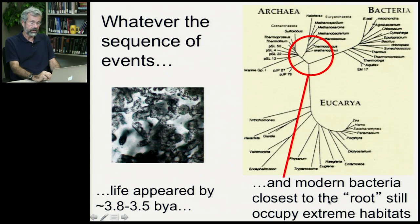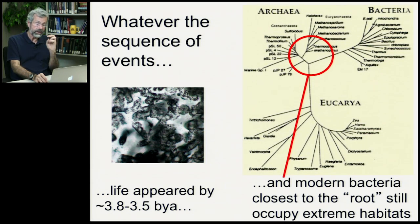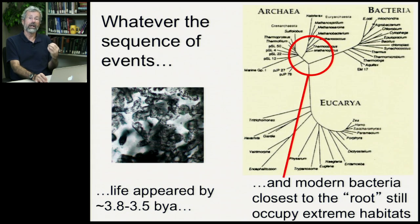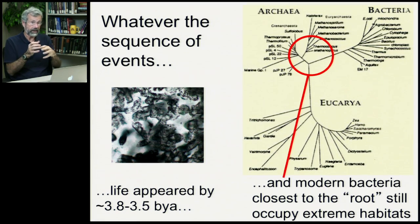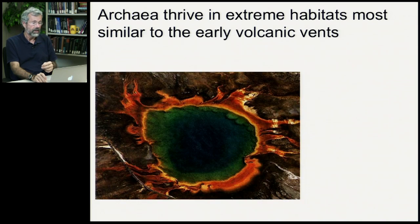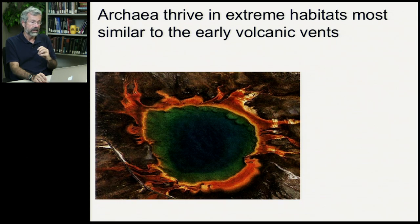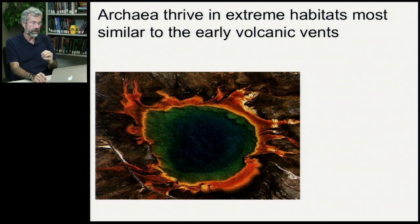The modern bacteria that are closest to this root occupy the kind of extreme habitats that we reckon characterized early earth — with all of that volcanic activity and all of those geysers everywhere. Archaea today thrive in extreme habitats, and habitats that are most similar to those early volcanic vents.